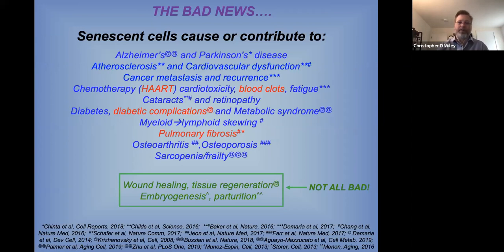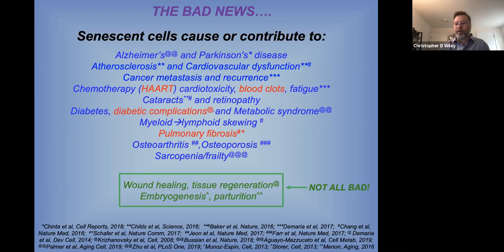But senescent cells aren't all bad. In context, they show up at the sites of wounds and they help us heal our wounds. They also are required for normal embryonic development and they send the signal that causes women to go into labor. So you wouldn't want to use a senescence-targeted therapy if you were recovering from surgery or if you were pregnant.